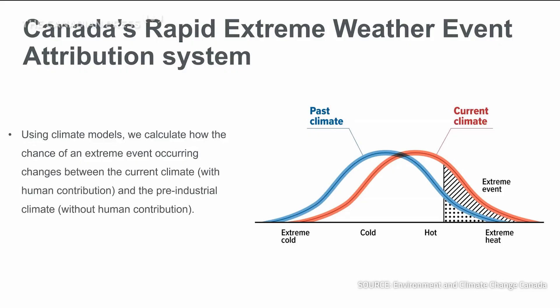This is illustrated in the diagram on the right for hot extremes. The current climate, represented by the red curve, is shifted towards warmer temperatures than the pre-industrial climate, the blue curve.